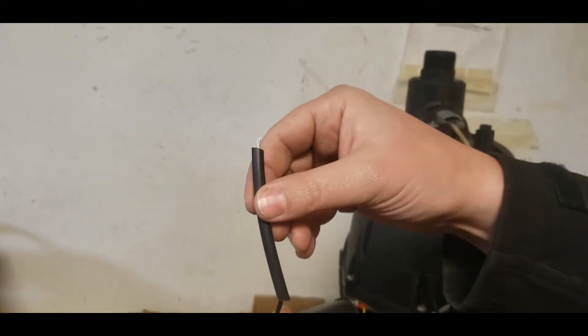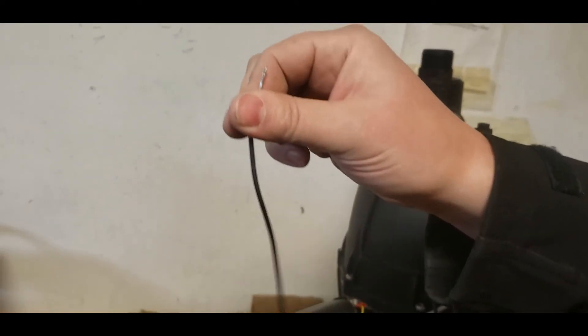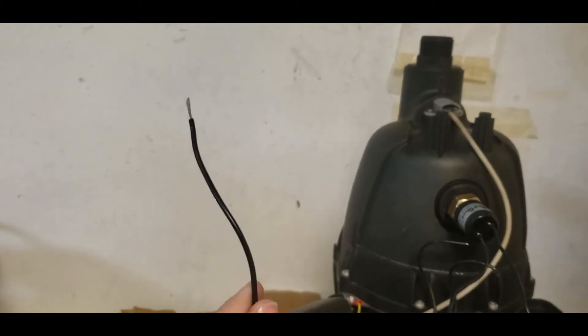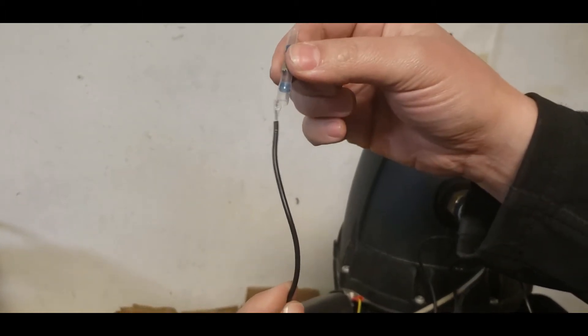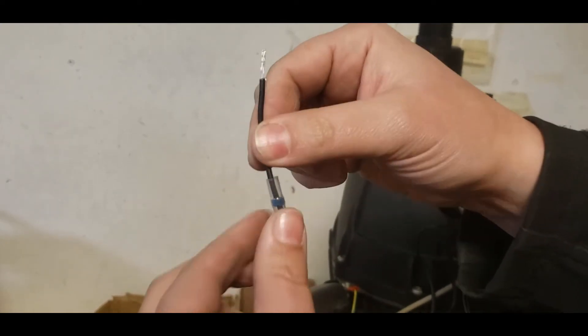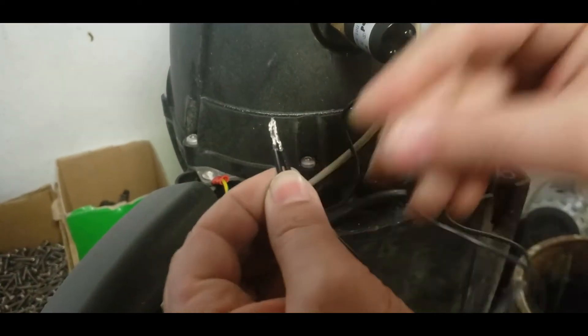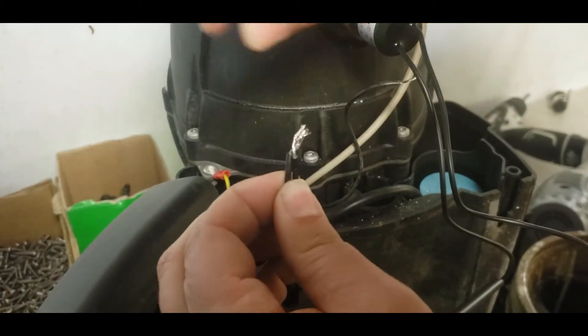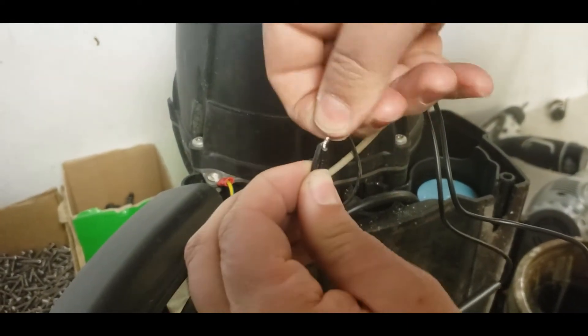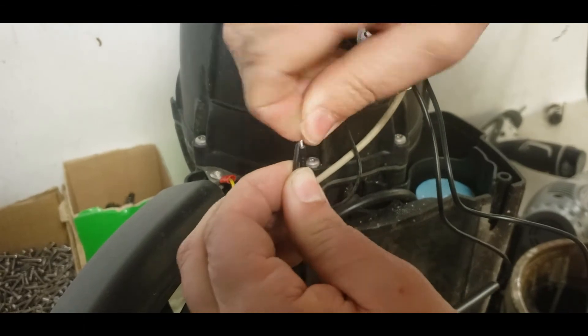Slide the heat shrink and solder sleeve onto each of the two wires of the pressure switch. Take one wire from the pressure switch and one wire from the pump and twist them together. It doesn't matter which one. Then do it with the other ones.